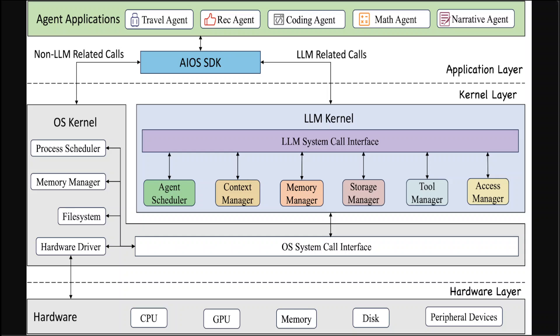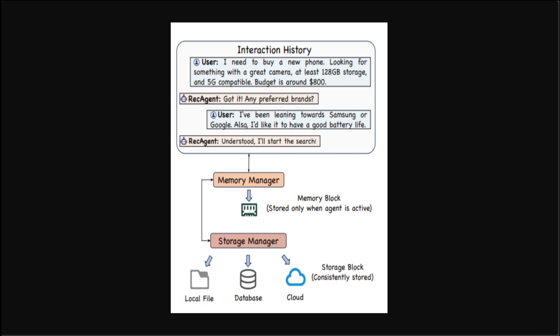So this is the whole architecture of this awesome AIOS LLM operating system. This is a snapshot of the memory manager. The memory manager manages short-term memory within an agent's life cycle, ensuring that data is stored and accessible only while the agent is active — either waiting for execution or during runtime. The current AIOS supports storing each agent's memory independently, which other agents have no direct access to unless authorized by the access manager. More complicated memory mechanisms such as shared memory pools among agents or hierarchical caches can be considered and integrated into AIOS in the future.